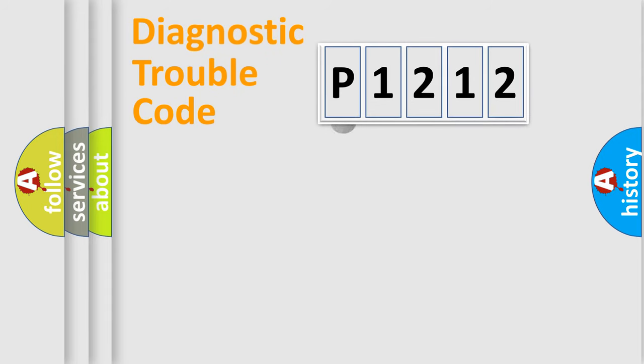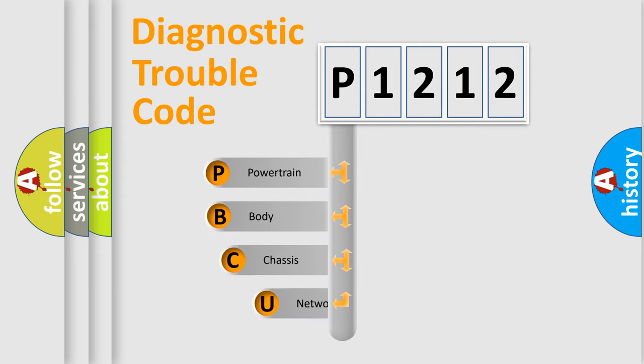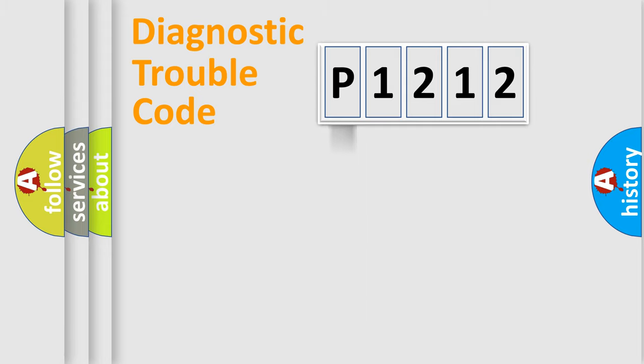First, let's look at the history of diagnostic fault code composition according to the OBD2 protocol. We divide the electric system of automobile into four basic units: powertrain, body, chassis, and network. This distribution is defined in the first character code.